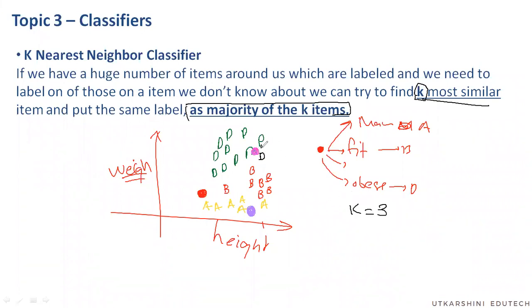If I take the K value of 3, the nearest point is this guy, this guy, this guy. So it's D, D, B. I will classify this as D because D is in majority.